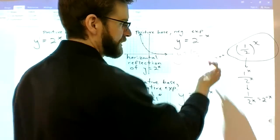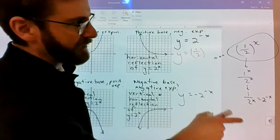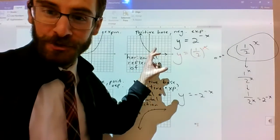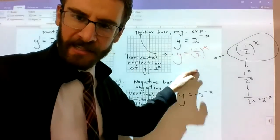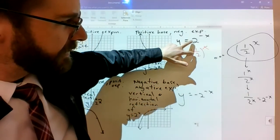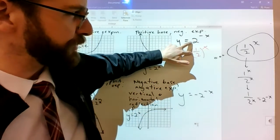Yeah. So when you think about a horizontal reflection of two to the x, you need to think not only of y equals two to the negative x but also – and I'll put it in a different color just to highlight the – I don't know.